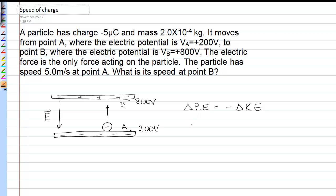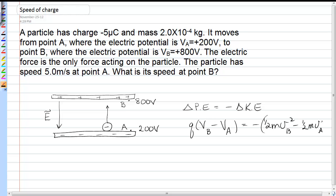Change in potential energy is defined to be the charge times the voltage final minus the voltage initial. And the change in kinetic energy would similarly be one-half mv final squared minus one-half mv initial squared.